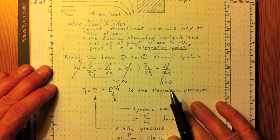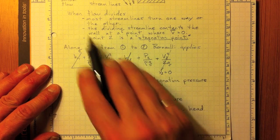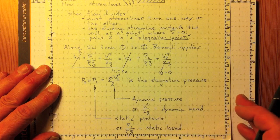Now we can apply Bernoulli along a streamline between any two points. And in this case we pick one and two, the two points on that stagnation point streamline.